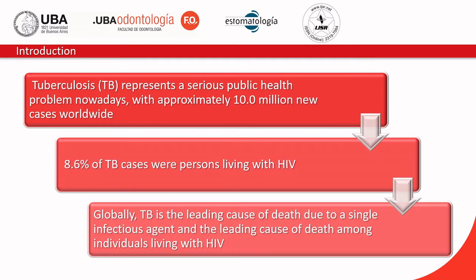According to the World Health Organization, in 2018, tuberculosis represents a serious public health problem, with approximately 10 million new cases worldwide. Among all TB cases, 8.6% were persons living with HIV. Globally, TB is the leading cause of death due to a single infectious agent and the leading cause of death among individuals living with HIV.